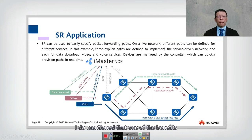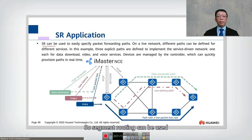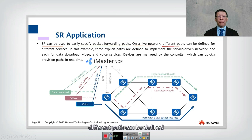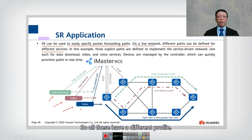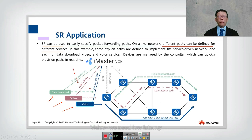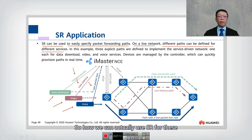One of the key benefits of segment routing is that it is service-oriented. Segment routing can be used to easily specify packet forwarding paths on a live network, with different paths defined for different services. In this diagram we have data download, video, and voice services — each with a different profile: data download needs high bandwidth, video needs low latency, and voice needs the least packet loss.